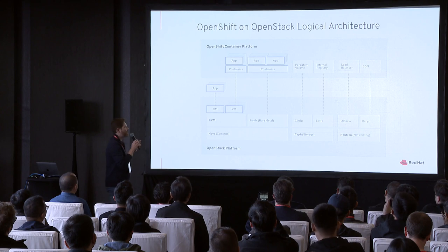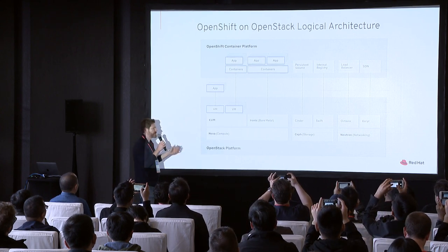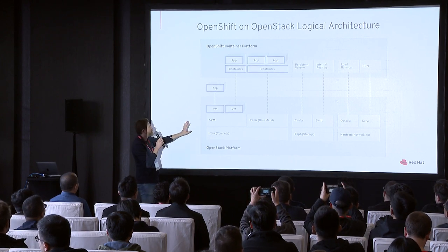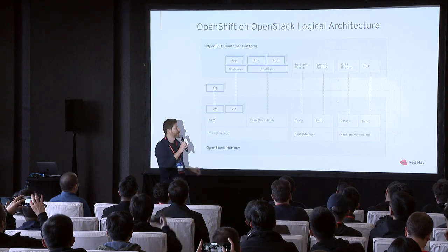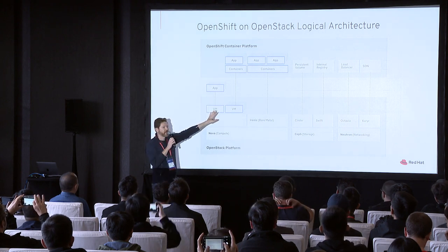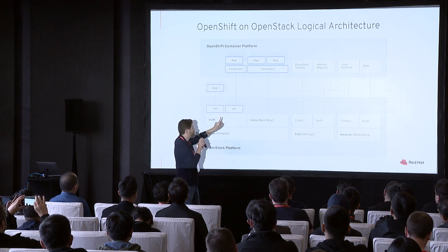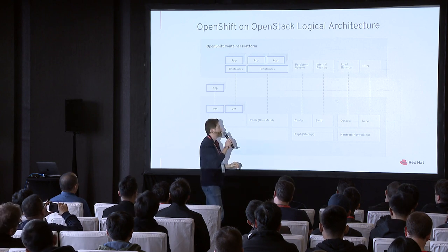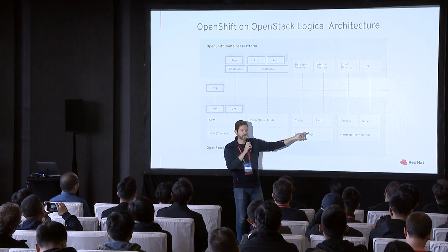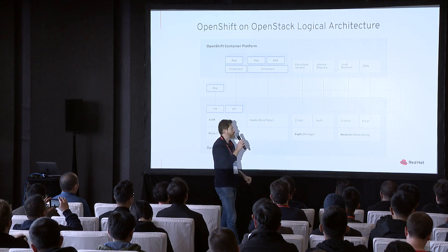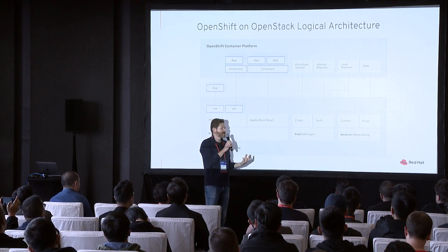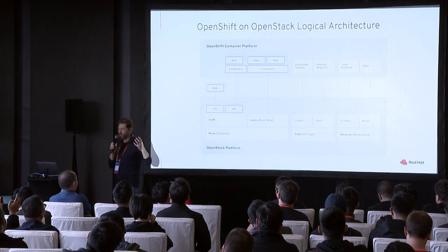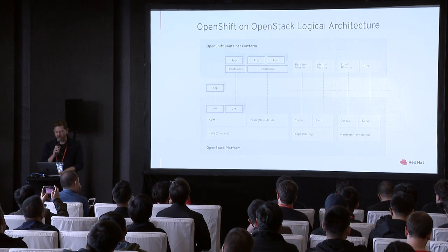This is how a typical logical architecture of OpenShift and OpenStack looks. You have OpenShift on top and OpenStack here. Your applications are the only thing you really care about. These applications can run on virtual machines directly or on containers, and these containers can run on virtual machines or on bare metal nodes. You also have a number of other services — Cinder, Swift, Octavia, Kuryr — that are part of this architecture and used transparently by the platform. They are complementary: one exposes the services and the other one consumes them.